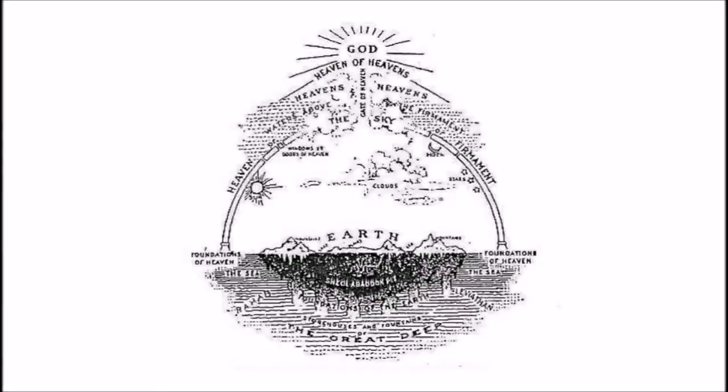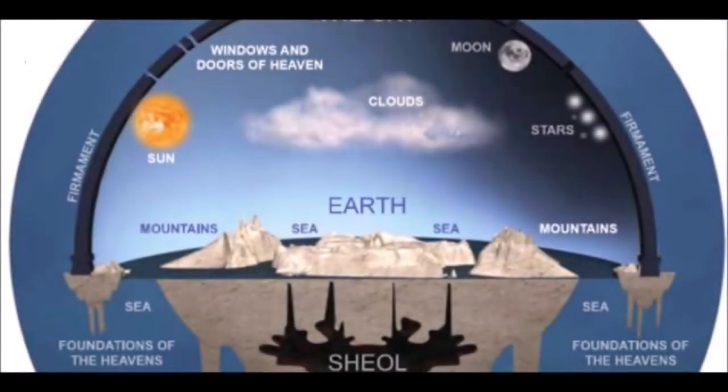Bottom line, we could go into over 200 verses that describe a still, flat earth set on pillars under a solid firmament with water above it. But all you have to do is Google Hebrew cosmology and you will find an image similar to this. This is what the Hebrew writers of the Bible and today's most studied Hebrew scholars agree the authors were describing about their world. It's the world that aligns with a literal reading of the scriptures and everything that we experience every day.